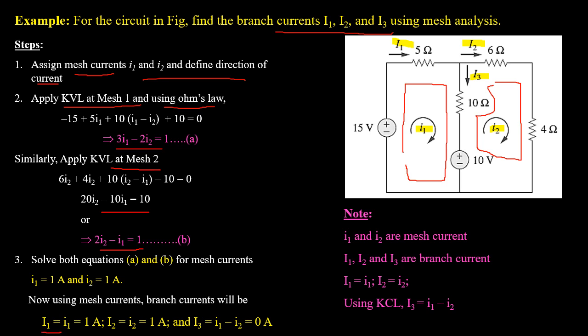Now we find the branch currents. Branch current capital I1 equals mesh current i1, which is 1 ampere. Branch current capital I2 equals mesh current i2, which is also 1 ampere. Branch current capital I3 equals the difference of mesh currents i1 and i2; in this case I3 equals zero, since both mesh currents are equal.